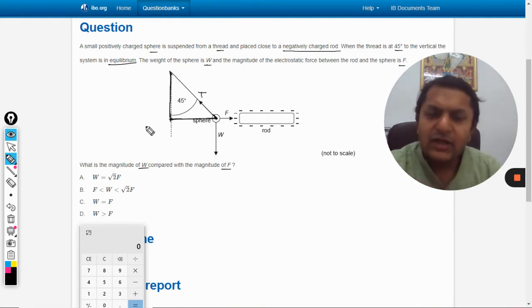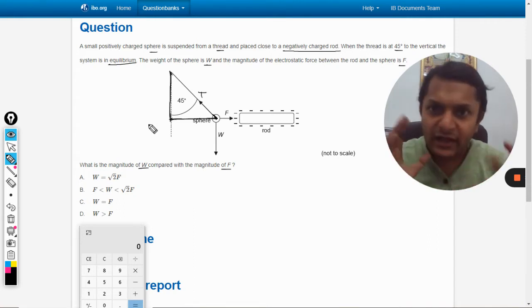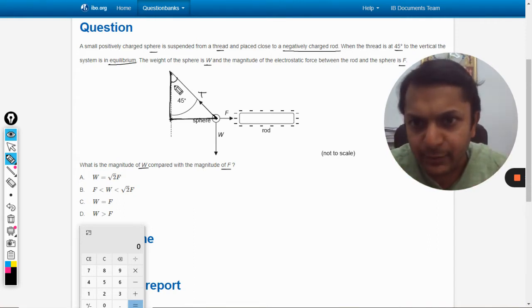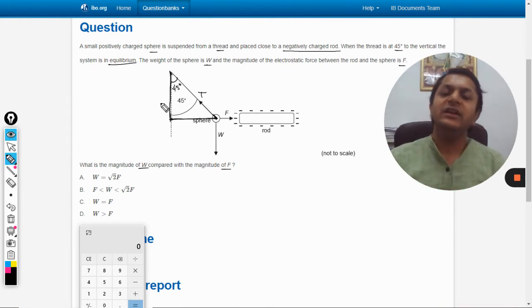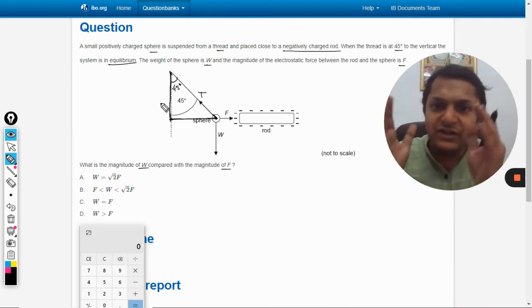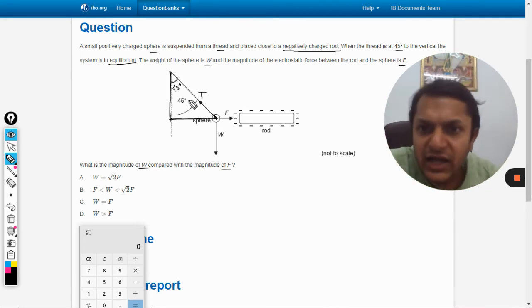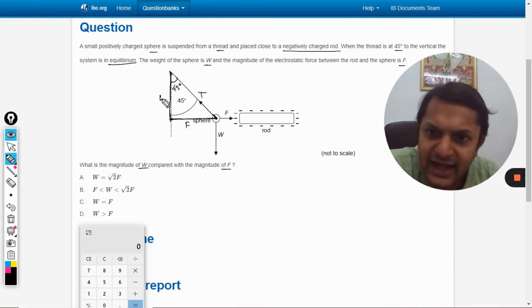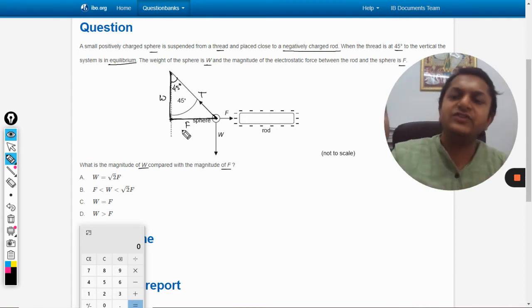So there we have a triangle, and we are sure this angle will be 45 degrees because we are just shifting this triangle. Now this is T, this is F, and this is W. We want the relationship between F and W, so we use tan θ.